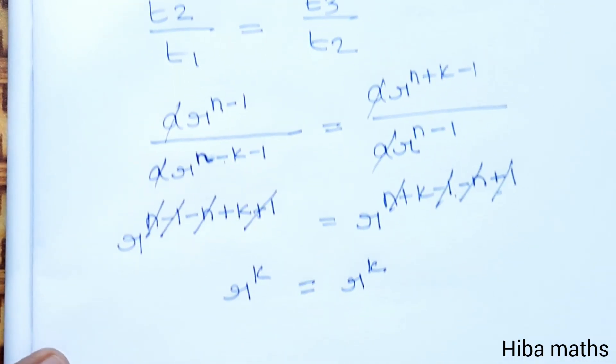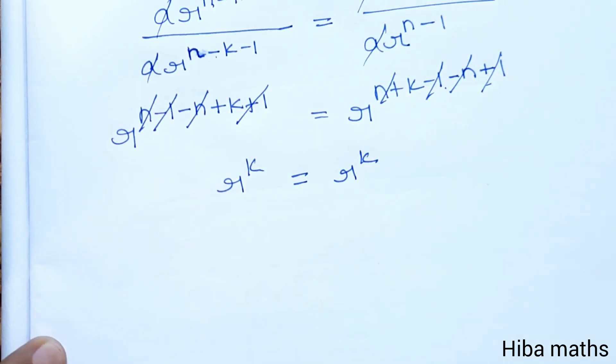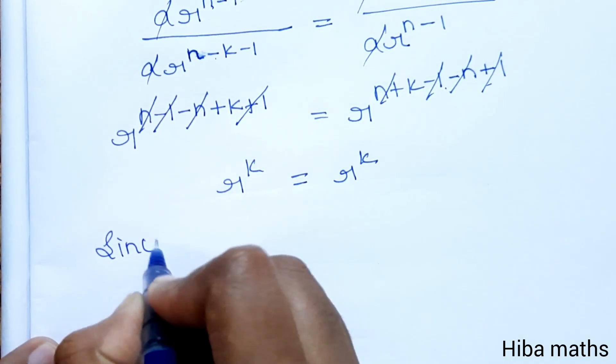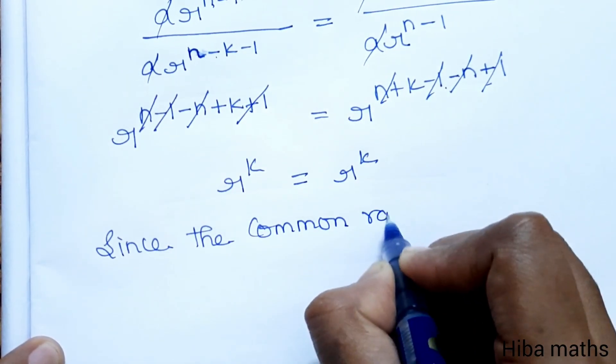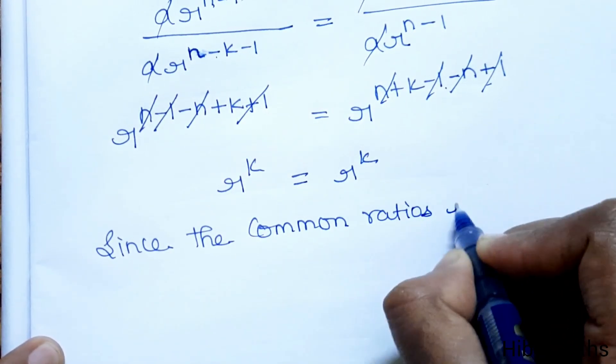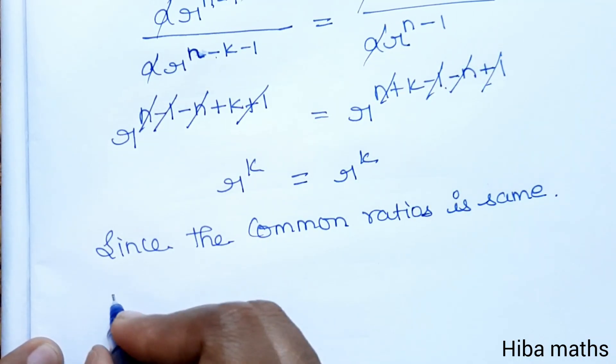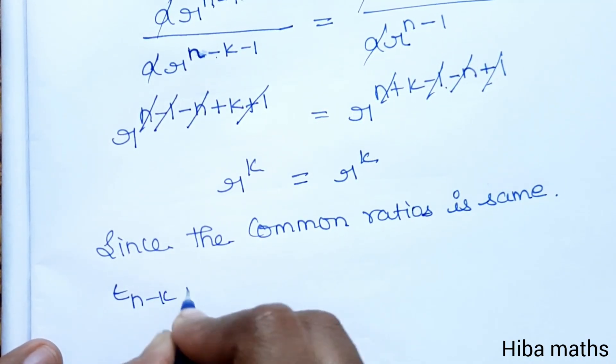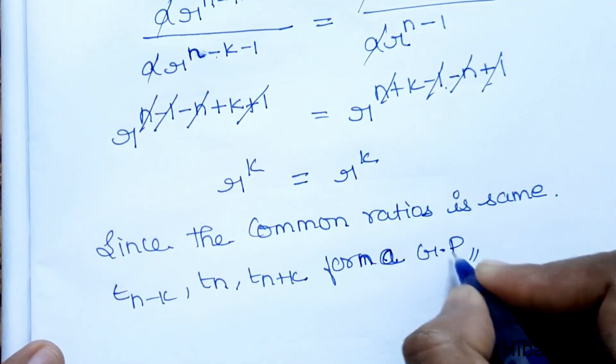The ratio is equal. Since the common ratios are the same, t_{n-k}, t_n, t_{n+k} form a GP. Hence proved.